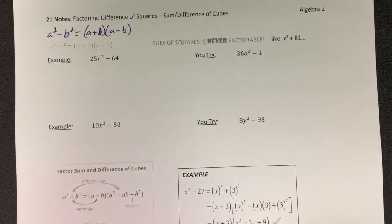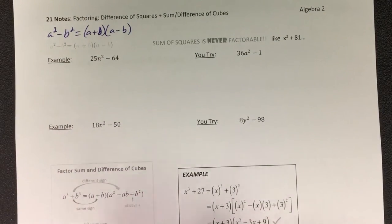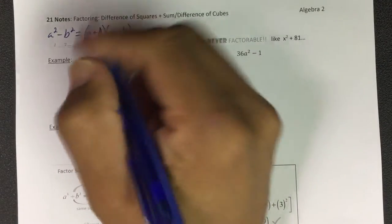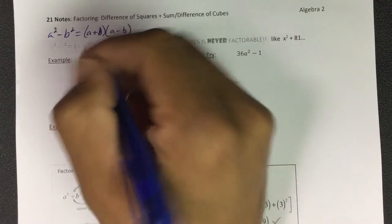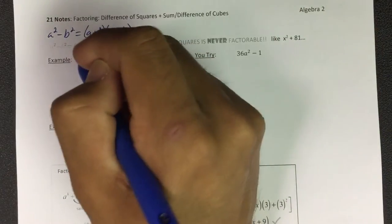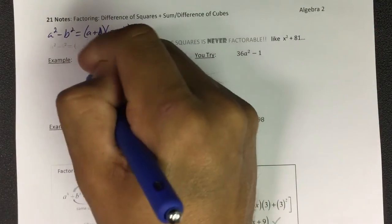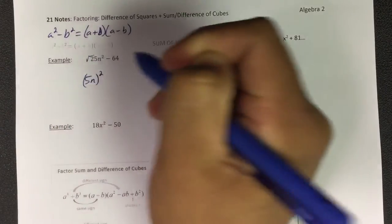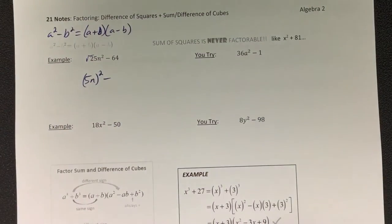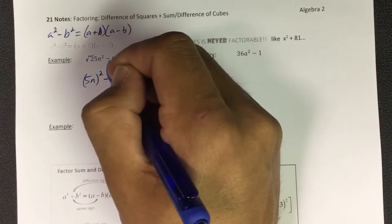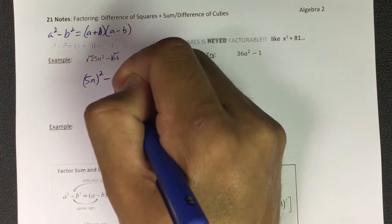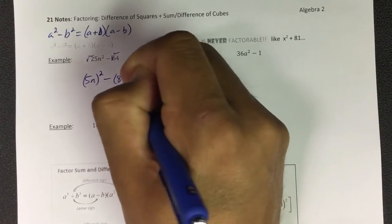Right here, what is the square root of 25? Square root of 25 is 5, so the way I can write this is 5n² minus, what's the square root of 64? Square root of 64 is 8, so this could be 8².